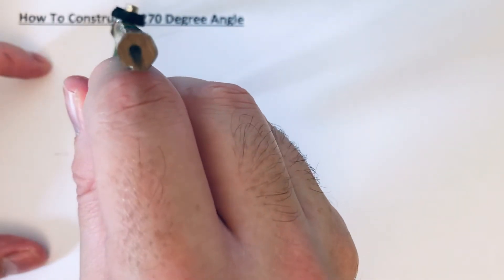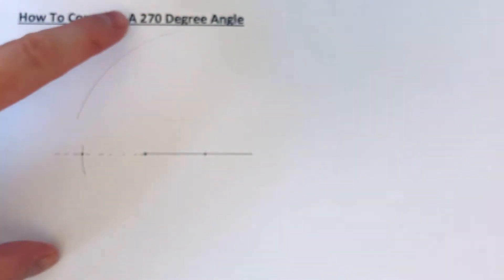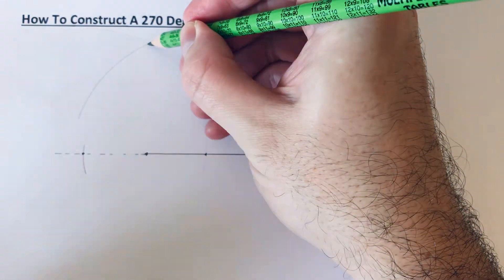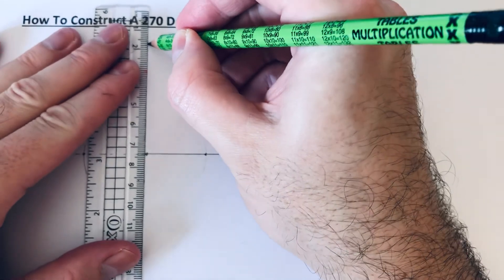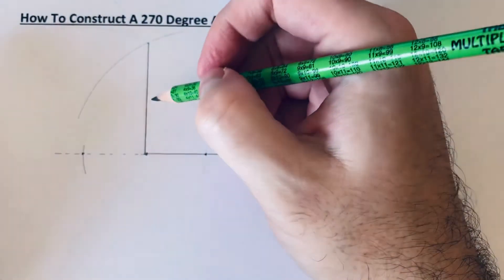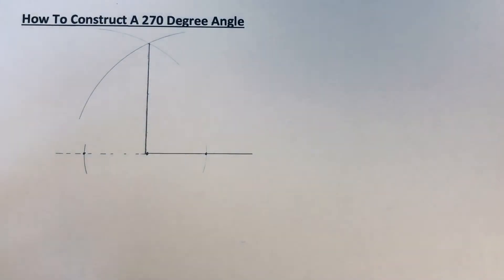That gives an intersection point here. If we join that back to the left side of the line, that would mean this angle here is 90 degrees.